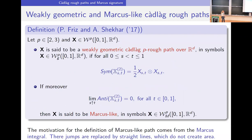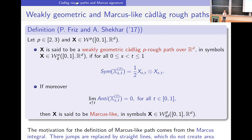One refines this to the notion of weakly geometric Cadlàg p-rough paths if the symmetric part of the matrix is determined by the underlying path — this is a first-order integral condition. For those familiar with stochastic integration, the Stratonovich integral satisfies this. We also look for the good notion in the jump case satisfying that condition.